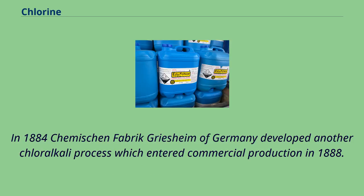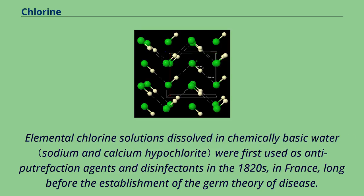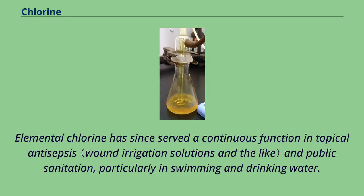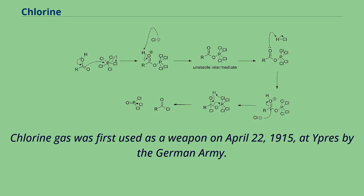In 1884, chemists in Farbwerk Griesheim of Germany developed another chloralkali process which entered commercial production in 1888. Elemental chlorine solutions dissolved in chemically basic water were first used as anti-putrefaction agents and disinfectants in the 1820s in France, long before the establishment of the germ theory of disease. This practice was pioneered by Antoine-Germain Labarraque, who adapted Berthollet's Javel water bleach and other chlorine preparations. Elemental chlorine has since served a continuous function in topical antisepsis and public sanitation, particularly in swimming and drinking water. Chlorine gas was first used as a weapon on April 22, 1915, at Ypres by the German army.